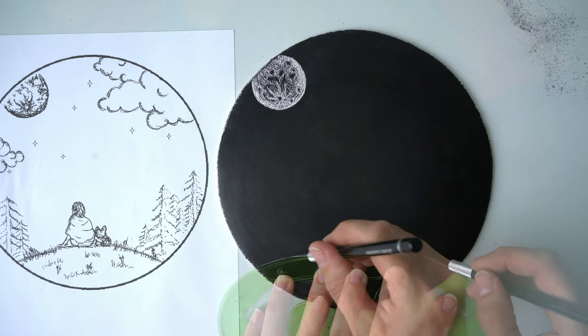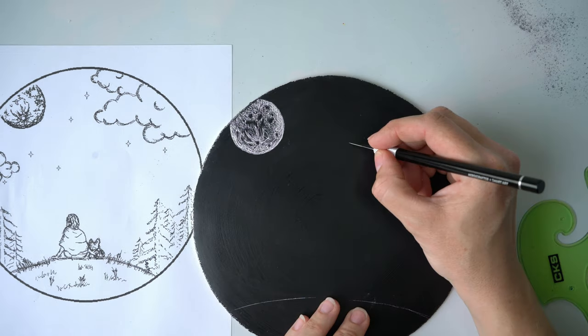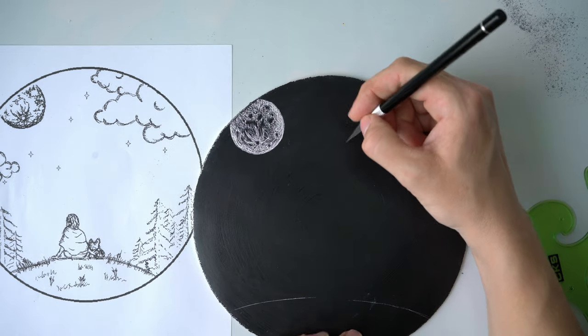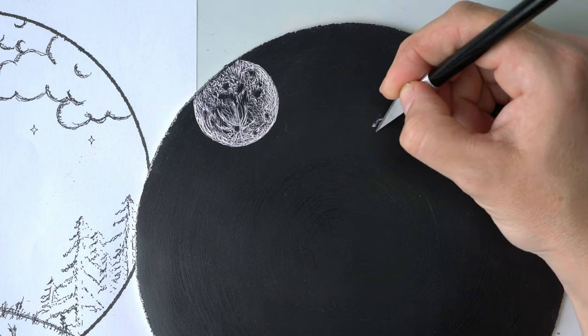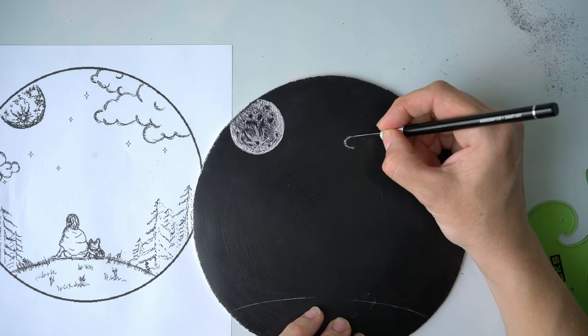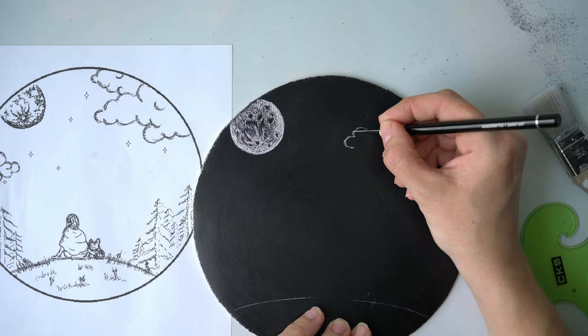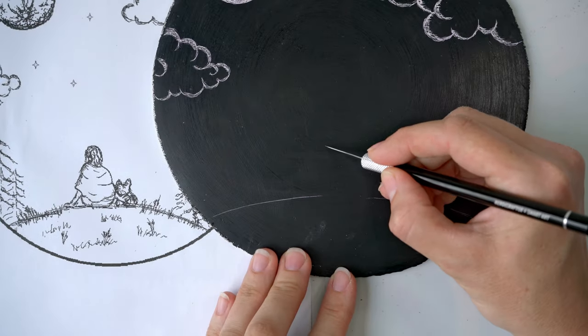Let's do the outline of our little hill so we know where it's going to end up. I think the clouds are next. I'm really thinking how I want to make them, so I might just go like this with just small lines. I think it's going to look good.